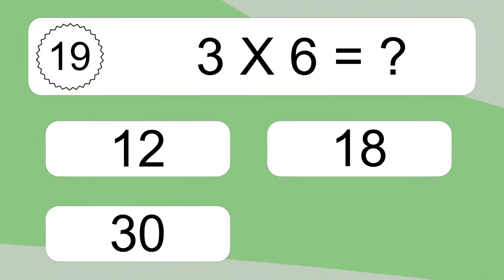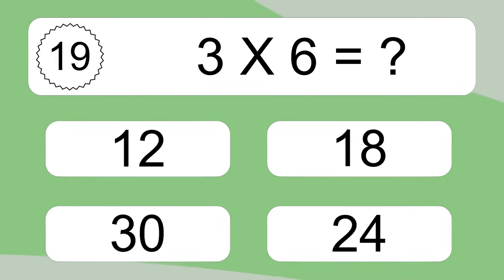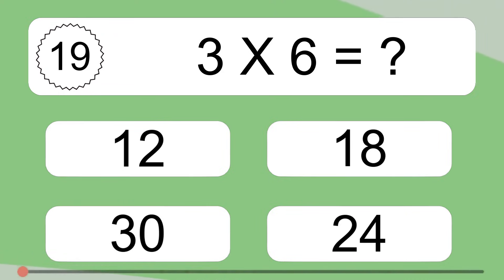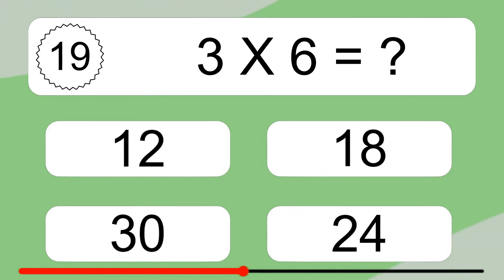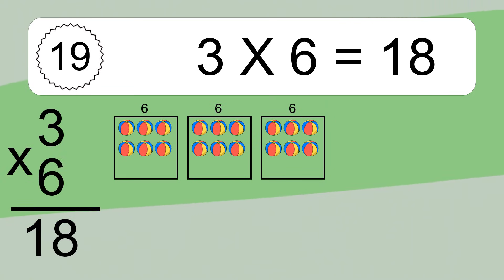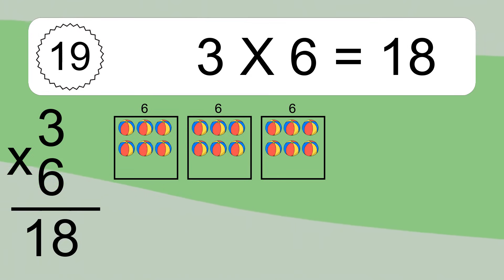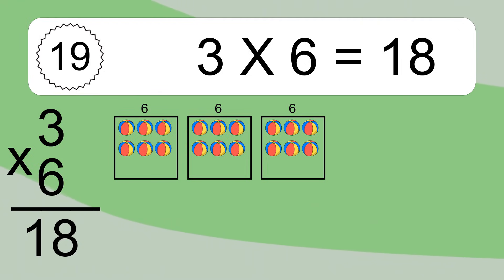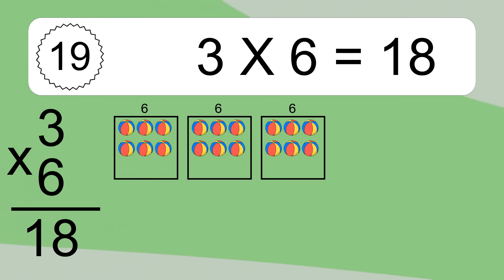3 times 6 equals what? 3 times 6 equals 18. We have 3 boxes and each box has 6 colorful balls inside. If you count all the balls in all the boxes together, you will have 3 times 6 balls. This equals 18 balls.